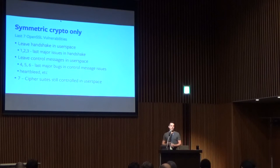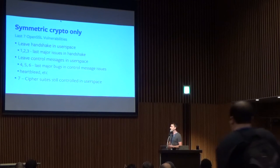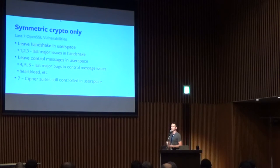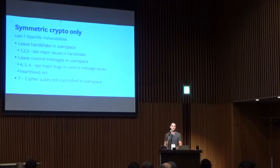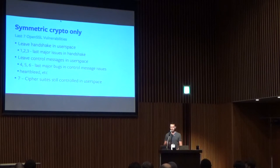Before we started this project, I grabbed the last seven vulnerabilities of OpenSSL. Three of them were handshaking issues — something that had to change in the handshake protocol to fix a vulnerability. Three of them ended up being bugs in the control messages — you probably heard of the heartbleed one, in the heartbeat messages, plus a couple different types of control messages that had issues. And then the last one was a cipher suite that happened to have found an attack against it. Our approach specifies the cipher suites from user space, so when you instantiate the socket, you also tell it what cipher suite you want to use. Basically, all these issues would have been resolved without having to change anything in kernel space.